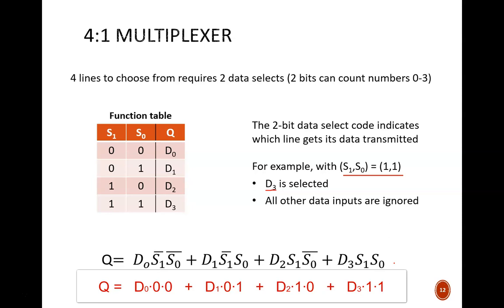Subbing in 1s to each of the other product terms yield 0, 0, and 0. So ultimately, Q just equals D3.